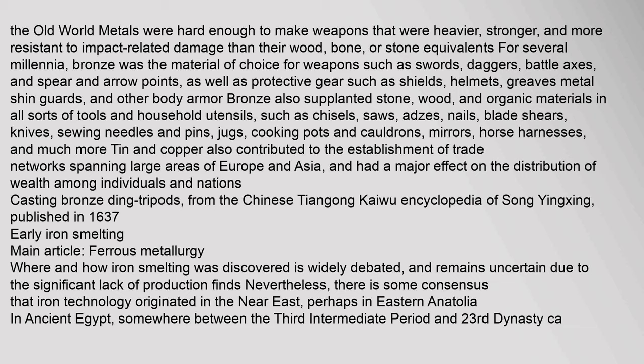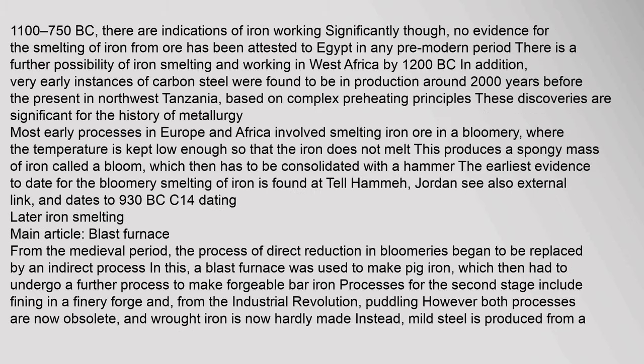Early Iron Smelting: Where and how iron smelting was discovered is widely debated and remains uncertain due to the significant lack of production finds. Nevertheless, there is some consensus that iron technology originated in the Near East, perhaps in eastern Anatolia. In ancient Egypt, iron smelting emerged somewhere between the 3rd Intermediate Period and 23rd Dynasty, approximately 1100–750 BC.